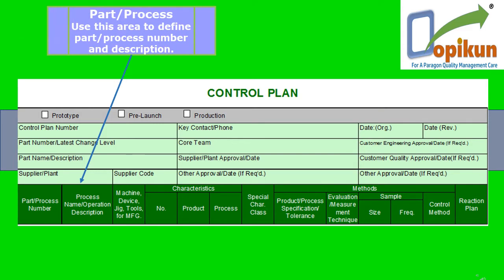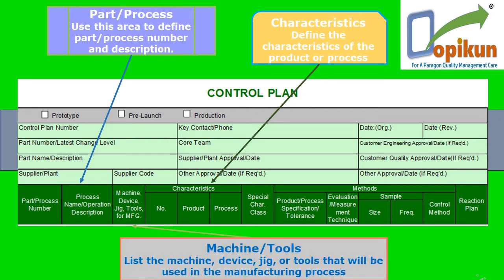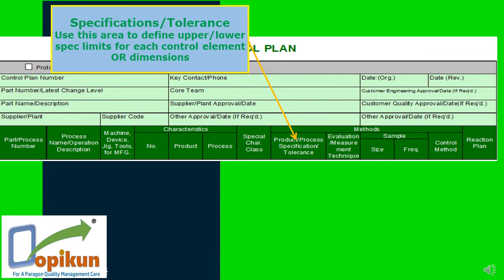Use this area to define part, process number, and description. Characteristics — this defines the characteristics of the product or process. Machine, tools — list the machine, device, jig, or tools that will be used in the manufacturing process. Specifications and tolerance — use this area to define upper and lower spec limits for each control element or dimension.